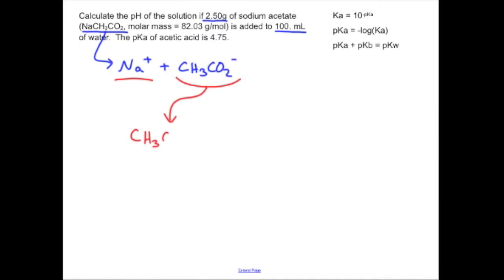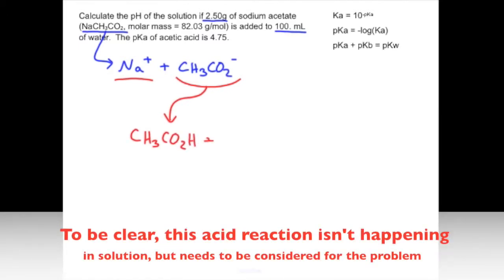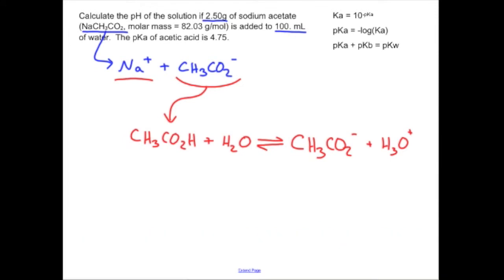So acetate will go to acetic acid. And that means this is all of a sudden an option. To have CH3CO2H, this is acetic acid, plus a water in equilibrium with acetate, that same very thing that we have up above, plus H3O+. Notice I'm not including the sodium. And what I have is my acid, and here's my base, here's my conjugate base, and here's my conjugate acid.